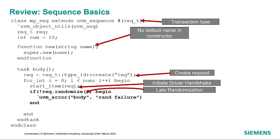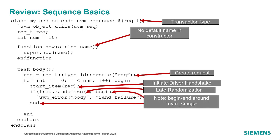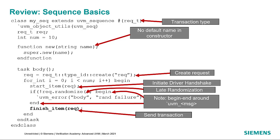If randomization fails we need to know about that. Notice that when we call a reporting macro like uvm_error or uvm_info, we surround it with a begin-end block because the macro itself is multiple statements, ensuring it stays in a single branch of the if. Then we call finishItem, which actually sends the transaction to the driver. This is the basic structure of every sequence: create the transaction, call startItem and finishItem, and around those you can do other things to enhance the sequence behavior.